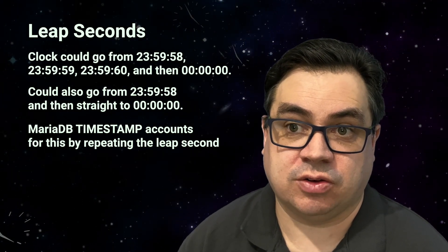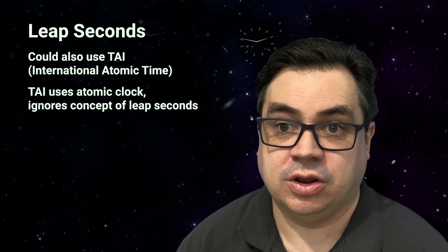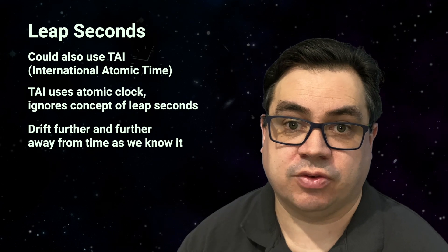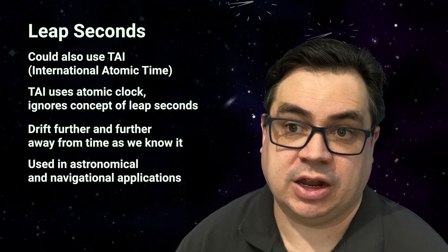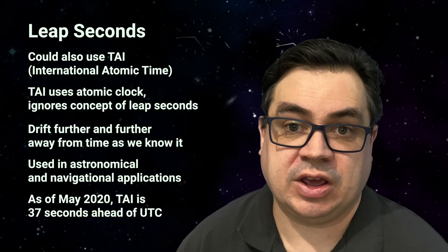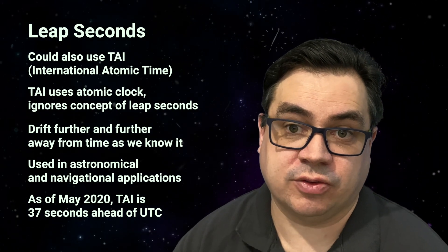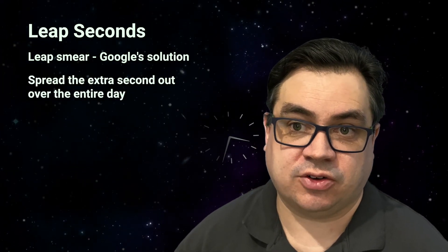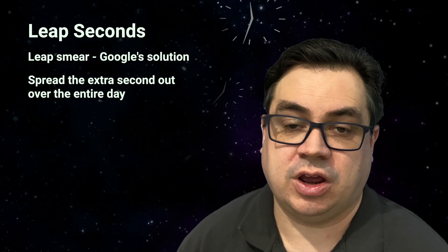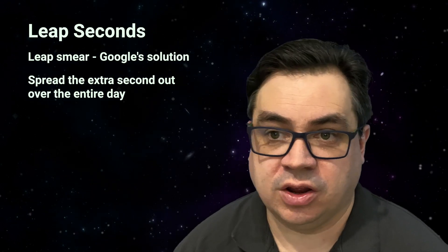You could also look at using International Atomic Time, or TAI — yes, another acronym completely in the wrong order in English. TAI basically uses the atomic clock and completely ignores the concept of leap seconds, slowly drifting further and further away from time as we know it. It's more commonly used in astronomical and navigational applications. At the time of recording, TAI is 37 seconds ahead of UTC, so there are some complicated conversions involved. But it is monotonic, meaning it always goes forward and will never add leap seconds. After a leap second caused big problems for Google, they implemented something called a leap smear into their time servers — on the day of a leap second, they deliberately spread the extra second out over the length of the entire day. Google has an entire reference page dedicated to how this works, and I fully recommend you check it out — there's a link in the description below.